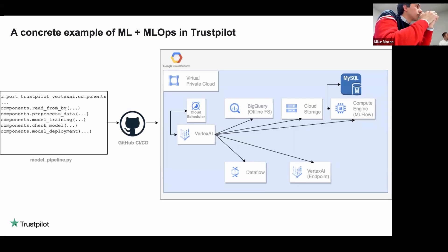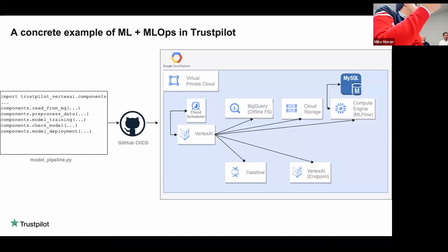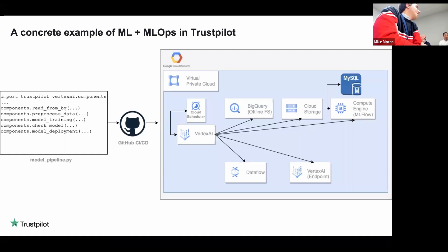Final question: do you think MLOps will get to a point where full continuous delivery is possible, the way the software world has worked toward continuous deployment? Or is ML just not mature enough yet? I think it's possible, looking at recent changes. If you think that now we have models we can use out of the box through an API, we won't be surprised if at some point we have a similar scenario for our own models. Maybe even in five years' time — I'm very optimistic.